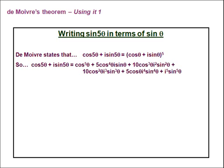So firstly, we are going to expand the brackets using the binomial theorem. The first term is cos⁵θ, the second term is 5cos⁴θ · i·sinθ, the third is 10cos³θ · i²sin²θ, etc.